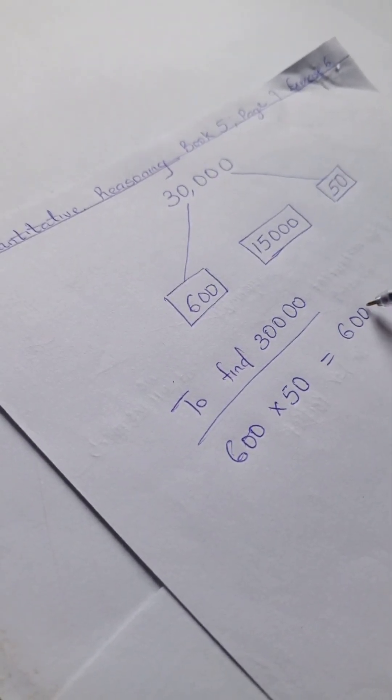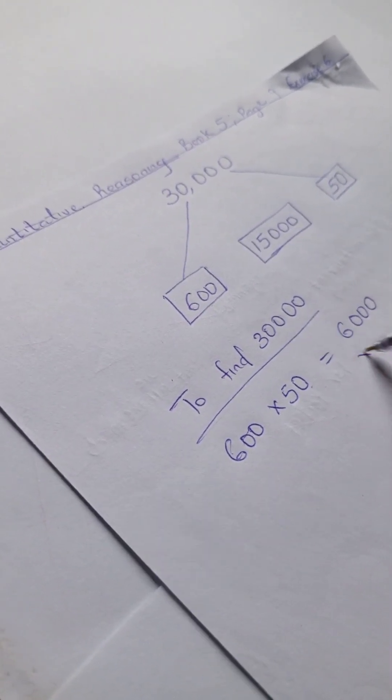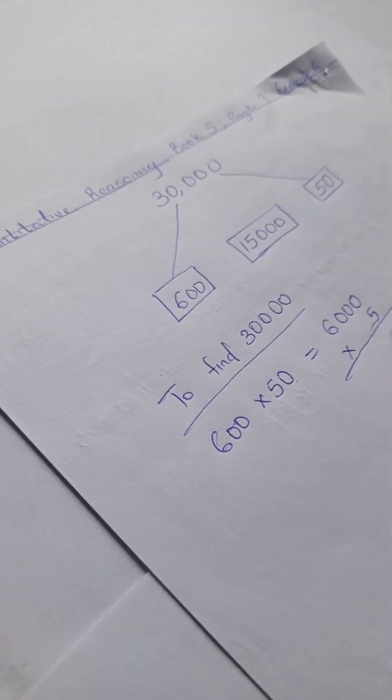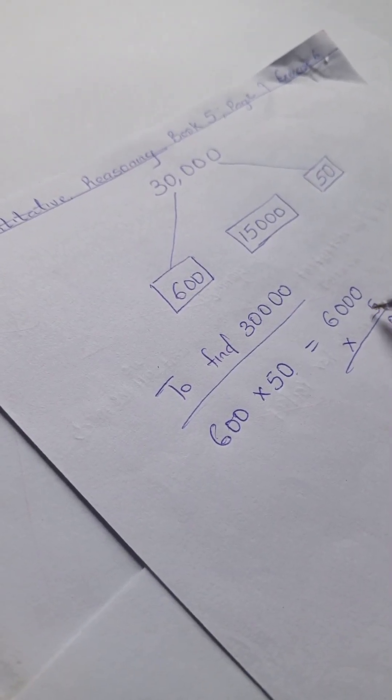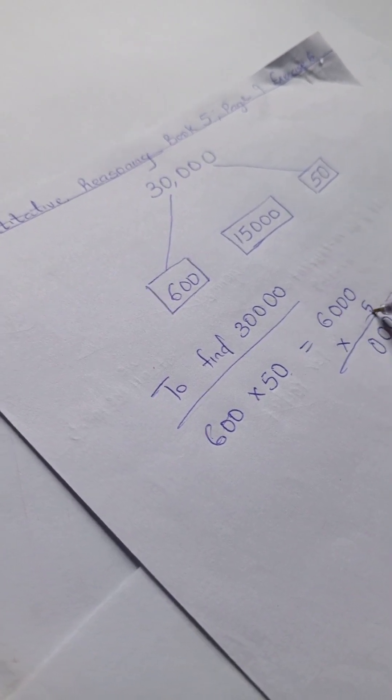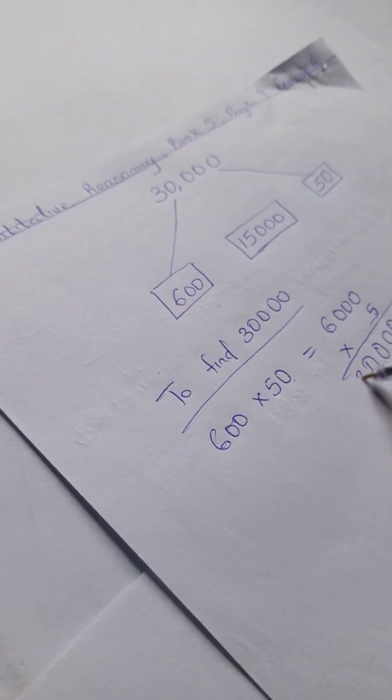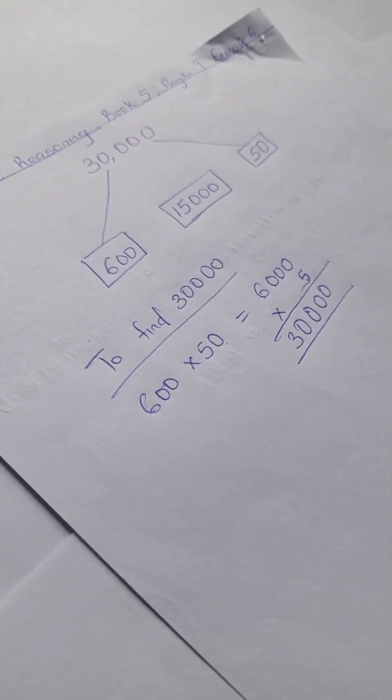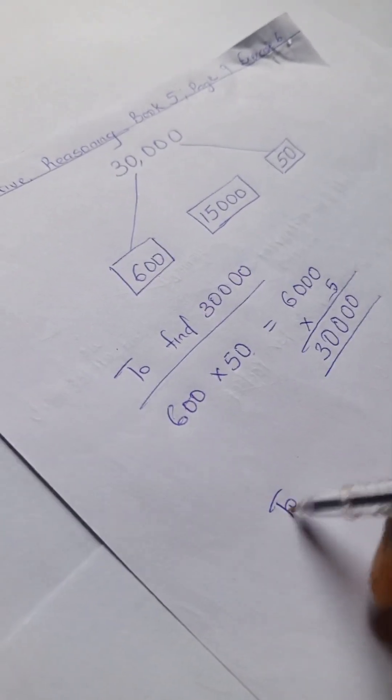If we were to expand this, we have 600 and 50. We can simply add this 50 here and we multiply: 5 times 0 is 0, 5 times 0 is 0, 5 times 0 is 0, and 5 times 6 is 30. So this is our 30,000.